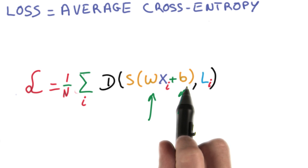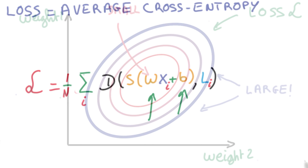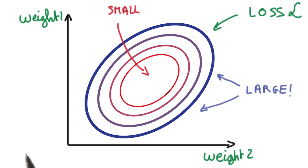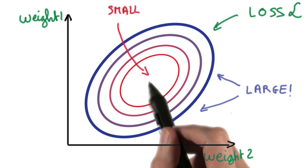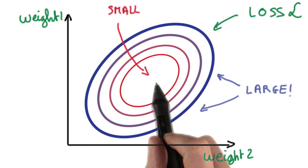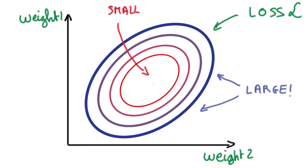The loss is a function of the weights and the biases, so we're simply going to try and minimize that function. Imagine that the loss is a function of two weights, weight one and weight two, just for the sake of argument. It's going to be a function which will be large in some areas and small in others. We're going to try to find the weights which cause this loss to be the smallest. We've just turned the machine learning problem into one of numerical optimization, and there are lots of ways to solve a numerical optimization problem.